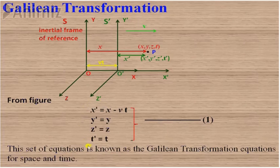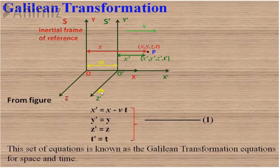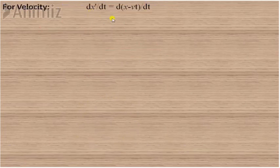x', y', z', t' are the coordinates in the S' frame and x, y, z, t are the coordinates in the S frame. We can convert all coordinates of S' frame to S frame using these transformation equations. Now for velocity, we differentiate these equations with respect to time t. The first equation x' equals x minus vt, when differentiated with respect to t, gives dx'/dt equals d(x minus vt)/dt.